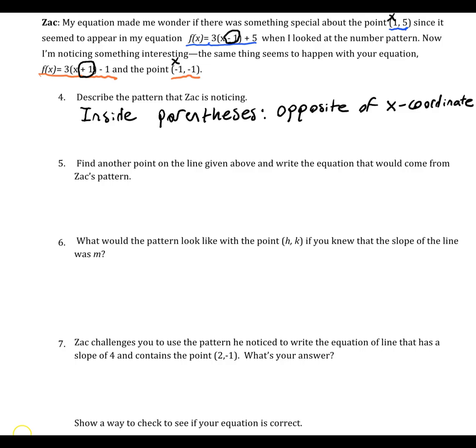And the other part of it is that outside the parentheses is appearing the y coordinate. Not the opposite of the y coordinate, but just the y coordinate. So I have negative 1 here as the y coordinate, and it's minus 1 outside the parentheses. I have 5 here as the y coordinate, and it's plus 5 up there.